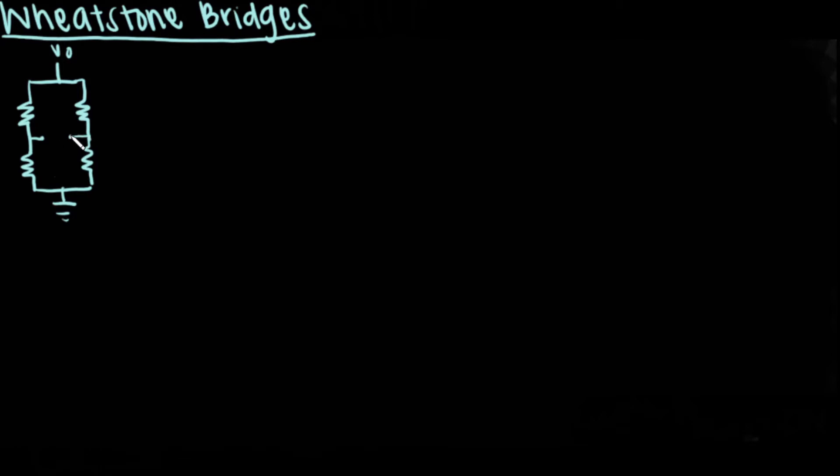A wheatstone bridge is a differential combination of two voltage dividers. Typically, one of the legs of the wheatstone bridge has an unknown resistance. By balancing the two legs, the unknown electrical resistance can be determined.